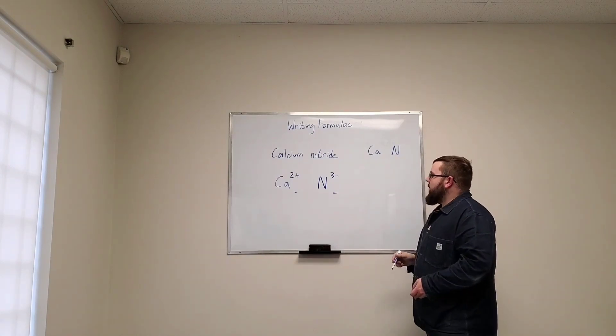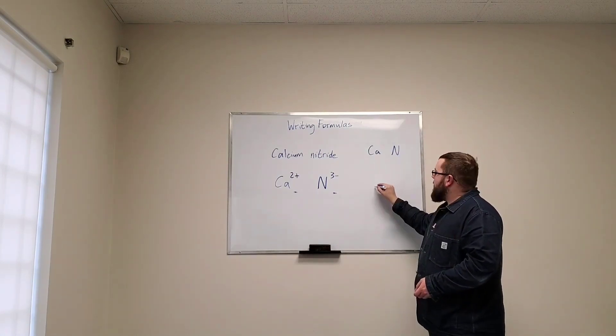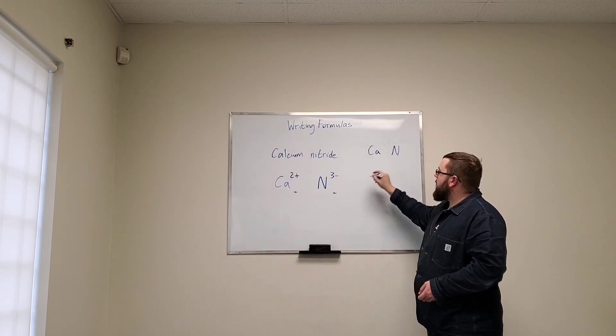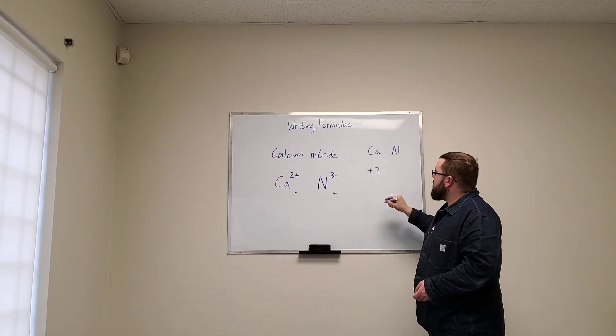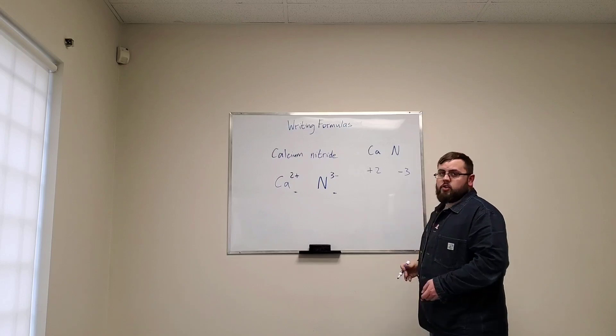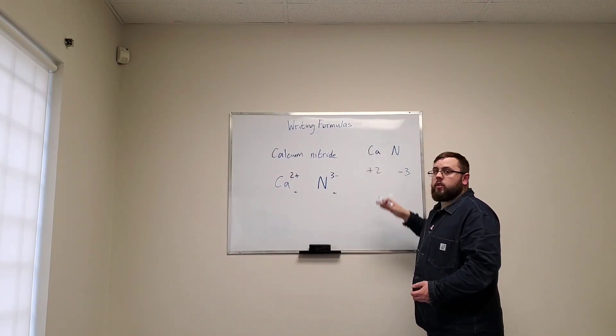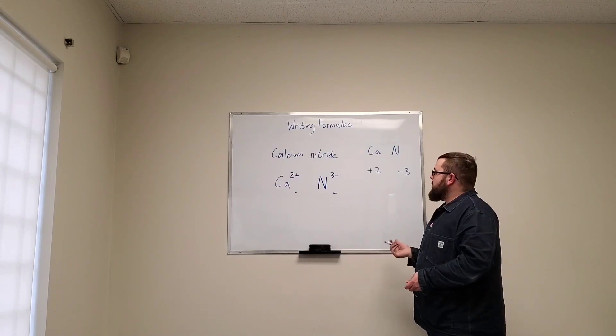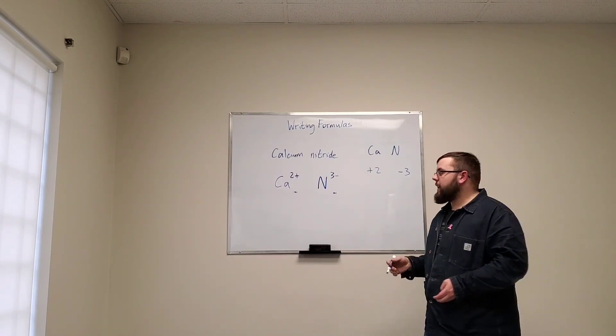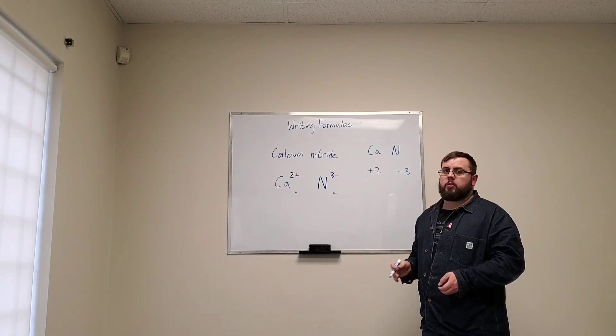So the way we do that is we take the positive 2 for the calcium and the minus 3 on the nitrogen and we try and figure out some number that's going to go in front that will help that balance out. The easiest way to do that is to find the lowest common multiple.